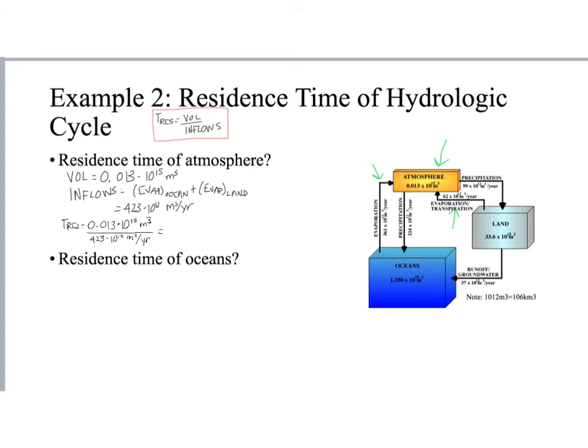So to figure out the residence time, I didn't want you to have to sit through me writing these numbers. So the residence time is equal to that 0.013 times 10 to the 15th cubic meters, divided by 423 times 10 to the 12th cubic meters per year, which is 0.0307 years, which is a little bit meaningless to us. But we can convert that to a time that makes more sense. And that's 1.6 weeks. Okay, so that is a good number to keep in mind and just think about that on average, a particle of water is in the atmosphere for 1.6 weeks.